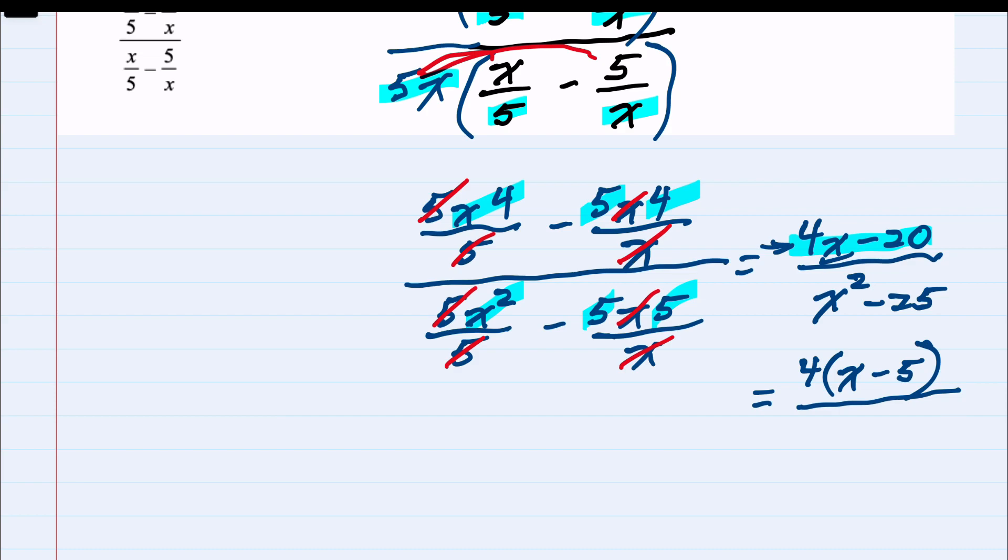And then in the denominator x squared minus 25 is the difference of two squares. That is the same as x squared minus 5 squared which would factor as an x plus 5 times an x minus 5.